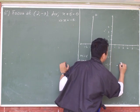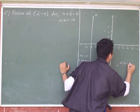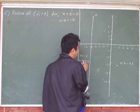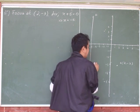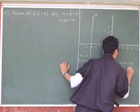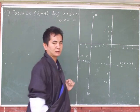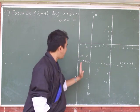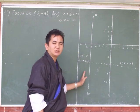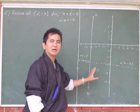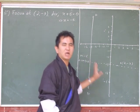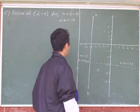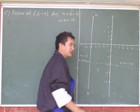So the focus point we have is (2, -3). Let me draw the axis — it is always better to draw the axis first. Now we have the focus and the directrix, and we can clearly see this is a concave right parabola.